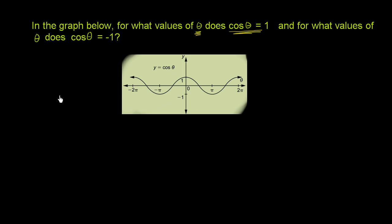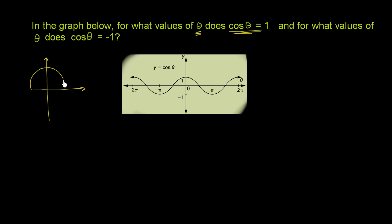This makes sense with our unit circle definition. Let me draw a unit circle — just roughly, to get the general idea of what's going on here. When theta is equal to 0, we're at this point right over here on the unit circle. What's the x-coordinate at that point? It's 1. And when theta is equal to 0 on this graph,